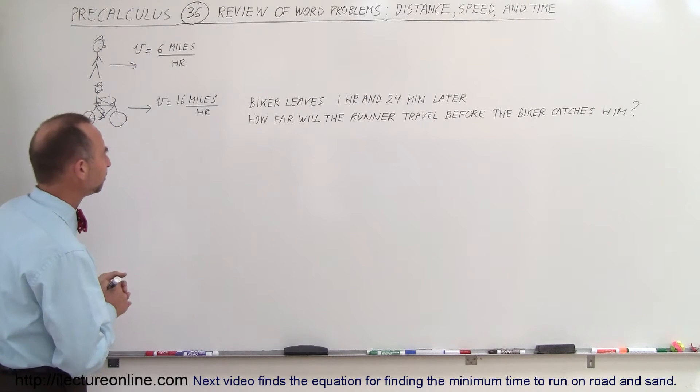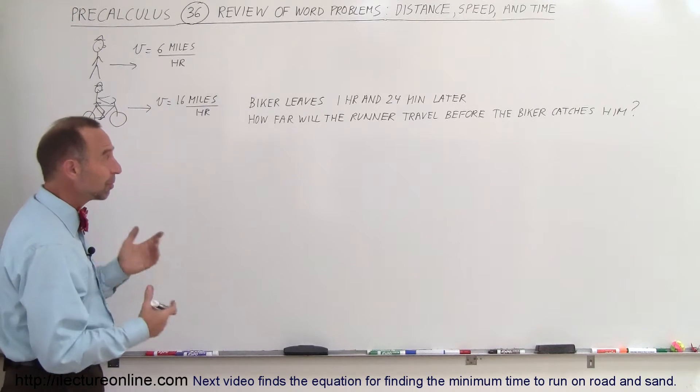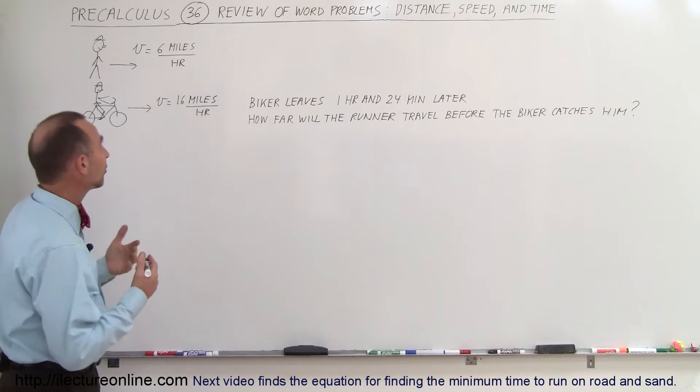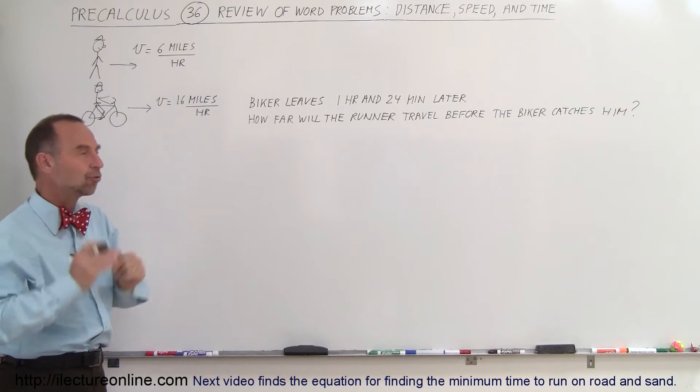All right, how do we do that? Well, there's a couple principles. First you want to let something be represented by x and maybe we want to represent the time spent by the biker traveling because the biker is going to spend less time traveling.